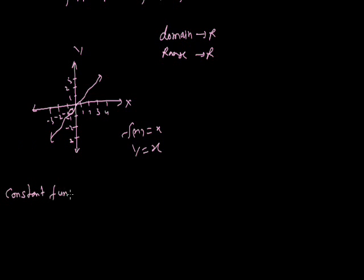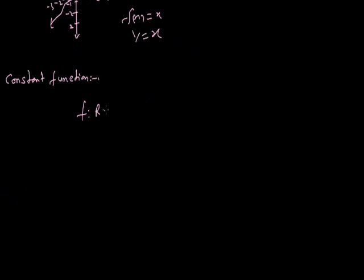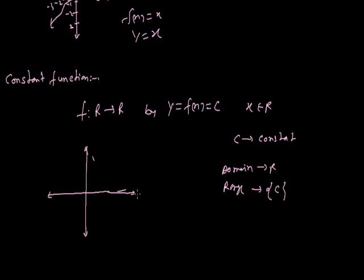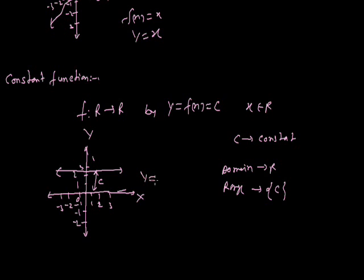Next is the constant function. We define it as f: R to R by y equals f(x) equals c, where x belongs to R and c is a constant. The domain belongs to real numbers and the range is {c}, because y equals c. The graph of the constant function is a horizontal line at distance c from the x-axis, so it is y equals c.